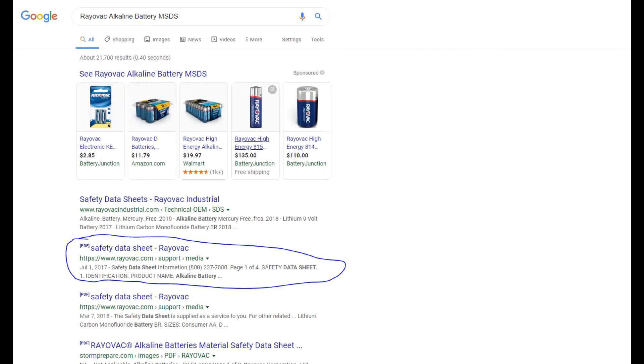If you search on Google for the material safety and data sheet, or MSDS, of the product you are using, you can find a list of the chemicals in the product. This was my first time using Rayovac brand alkaline batteries, so I wasn't sure of what exact chemicals were in it.